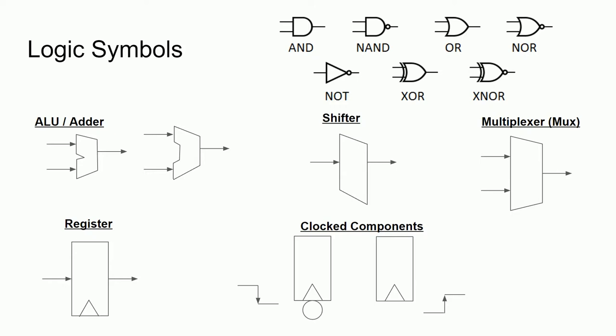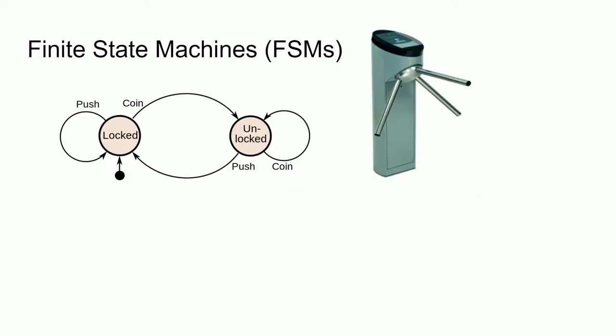Now that we have covered a few components, note that most of them have controlling input signals such as the MUX selection, the shift amount and direction, the ALU operation, and the register write and clear signals. You should be asking yourself: how are these control signals typically generated? The simple answer is by using combinational logic like the primitive gates, but that can be challenging to design, so the more complicated but easier to implement answer is a finite state machine. Finite state machines or FSMs are clocked devices with a clearly defined internal state and clearly defined transitions based on the inputs.